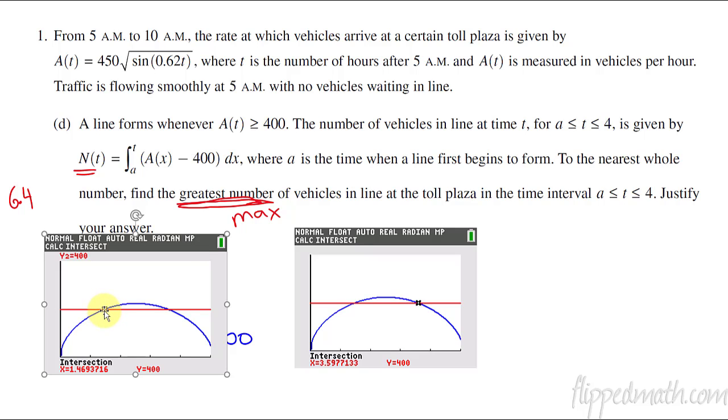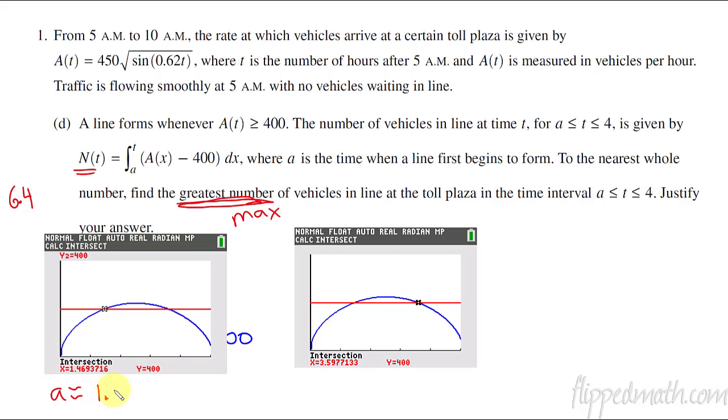So I'm going to do a quick little calculate the intersection points. And there's my first one. I'll deal with that in just a minute. Now let's get my second point. There it is. All right. So I've got two points here. I've got that they are going to cross. One of them is at 1.469 and the other one is at 3.59. Now you don't want to round these answers. So what I'm going to do is give these some labels. This one is actually my A. The problem stated that when A is above 400, it's going to go from A to 4. So A is approximately 1.4693716. And my letter B would be approximately 3.5977133.